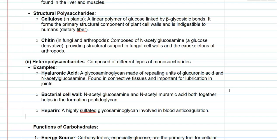Heparin, which plays a major role in blood anticoagulation, is in turn made up of repeating units of glucuronic acid and N-acetylglucosamine. It is technically referred to as a sulfated glycosaminoglycan.